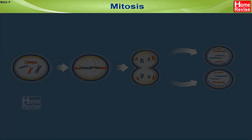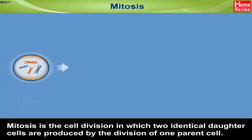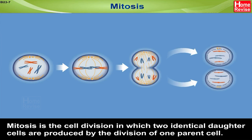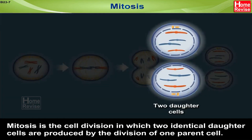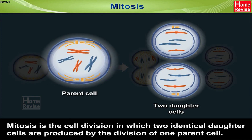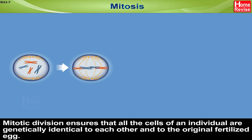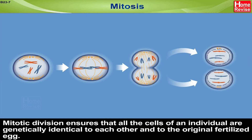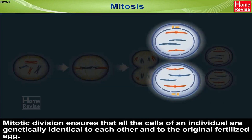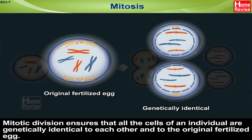Mitosis is the cell division in which two identical daughter cells are produced by the division of one parent cell. Mitotic division ensures that all the cells of an individual are genetically identical to each other and to the original fertilized egg.